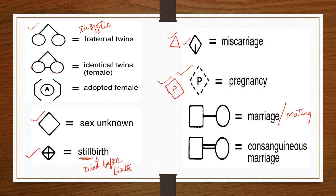Marriage or mating between cousins or closely related couples is represented with a double line connecting the male and female symbols. A double line indicates that the couple is closely related — for example, cousin marriages.